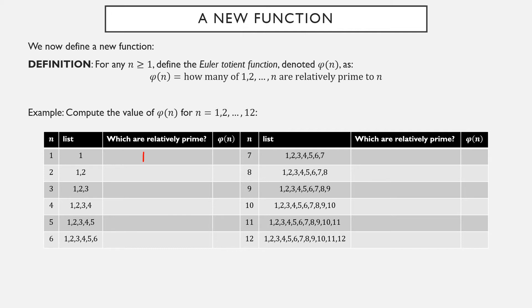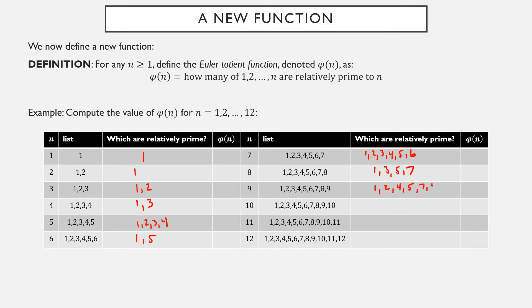Well, 1 is relatively prime to 1. 1 is relatively prime to 2 but 2 is not. 1 and 2 are relatively prime to 3 but 3 is not. 1 and 3 are relatively prime to 4 but 2 and 4 are not. 1, 2, 3, and 4 are all relatively prime to 5 but 5 isn't. 1 and 5 are relatively prime to 6 but not 2, 3, 4, or 6. 1, 2, 3, 4, 5, and 6 are all relatively prime to 7 but 7 isn't. 1, 3, 5, and 7 are relatively prime to 8. 1, 2, 4, 5, 7, and 8 are relatively prime to 9.